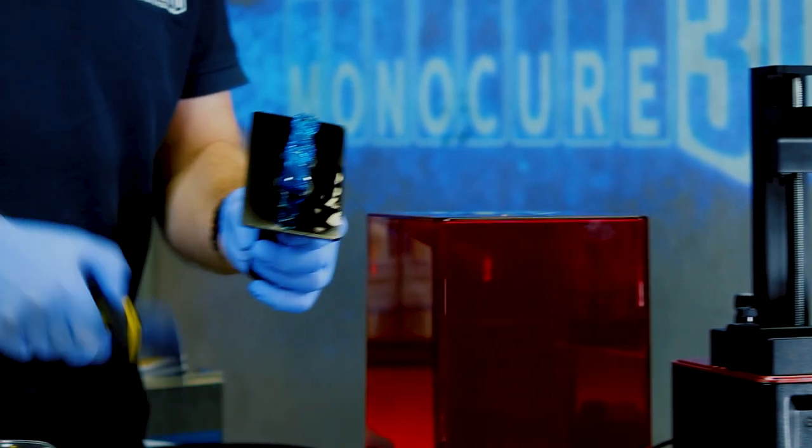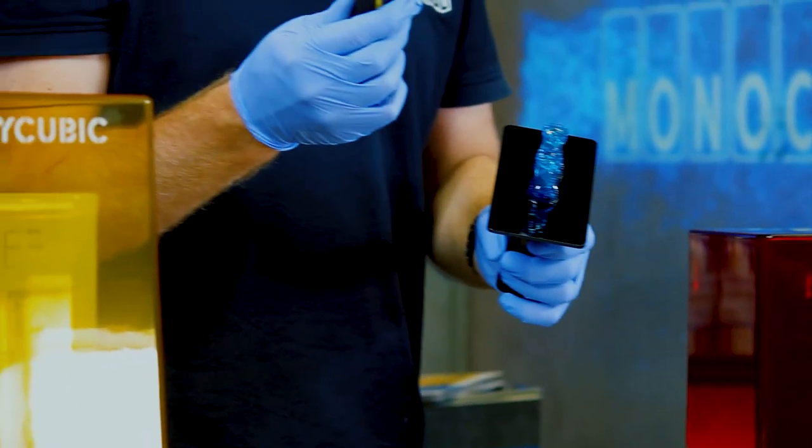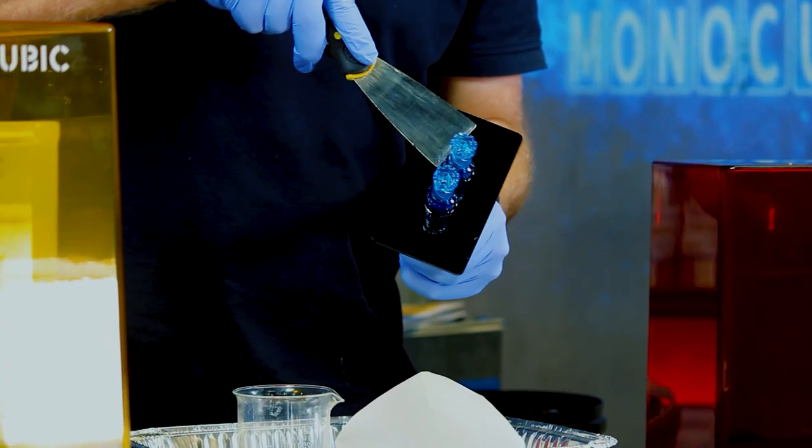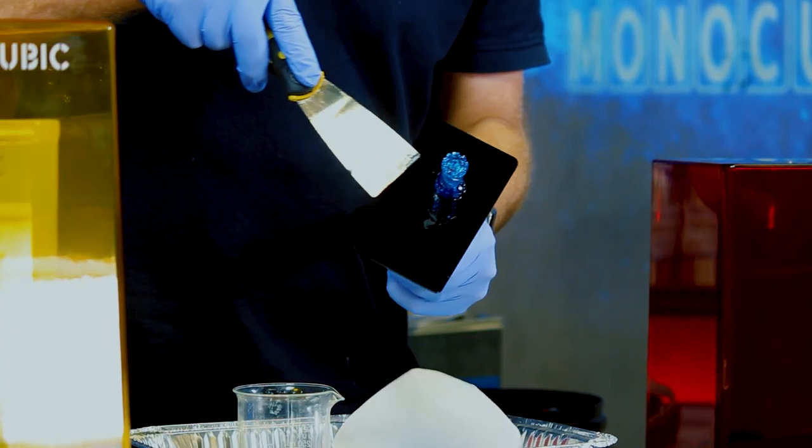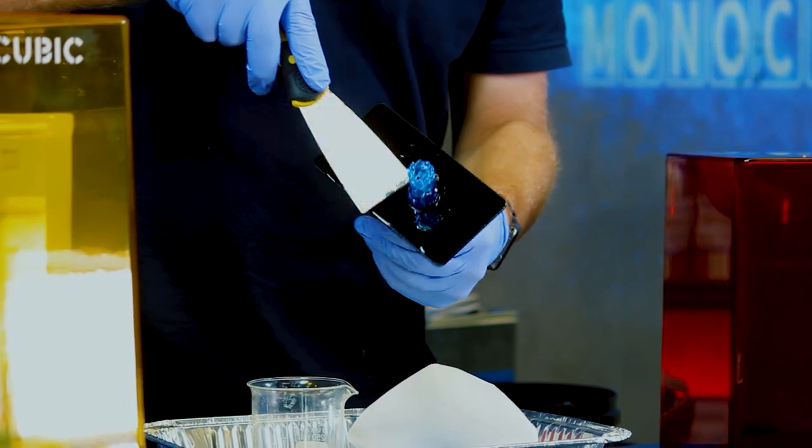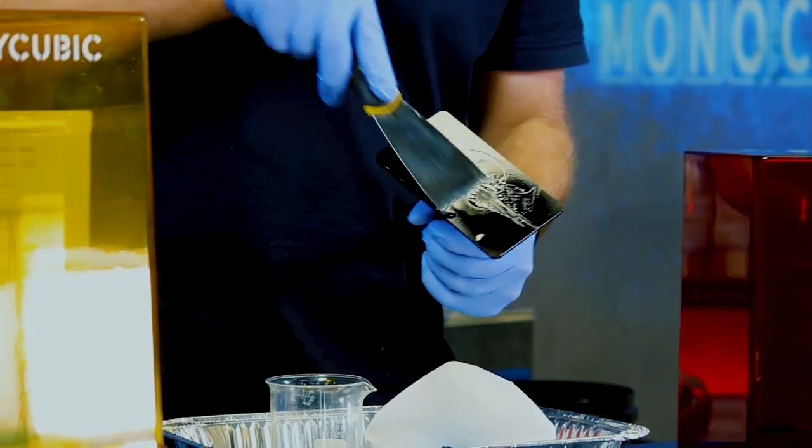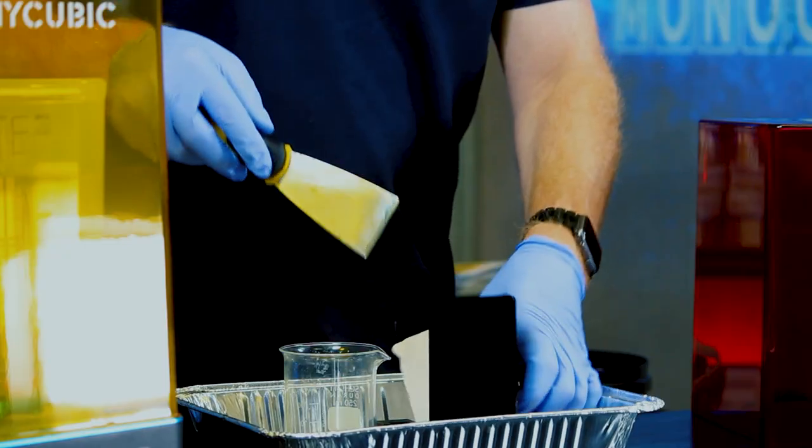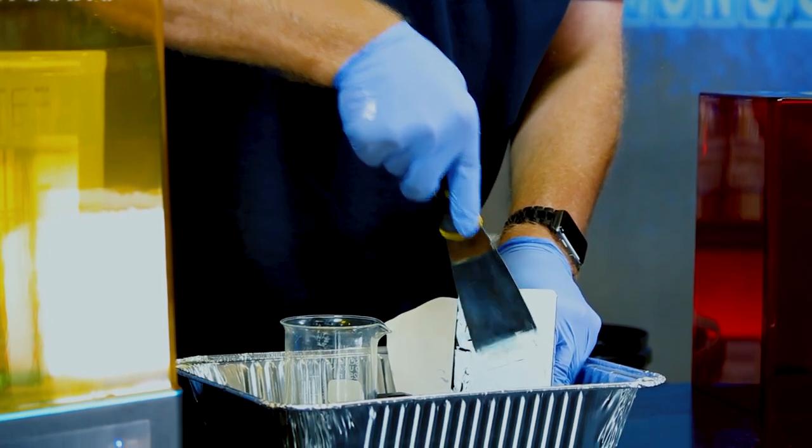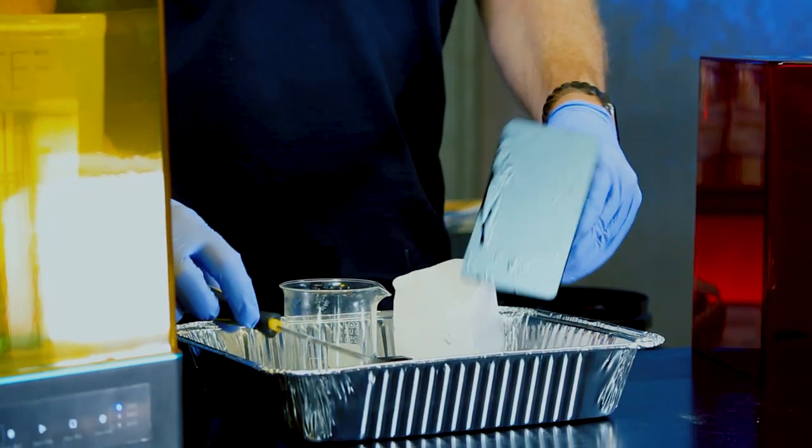The next thing we need to do is get these off. Now I always use a paint scraper like this. I just work around the base of it and try and find a spot. There you go, that one came off pretty easily. There will be a spot where it's not as stuck as anywhere else. Sometimes they can be stuck harder than other times. It's usually pretty easy.